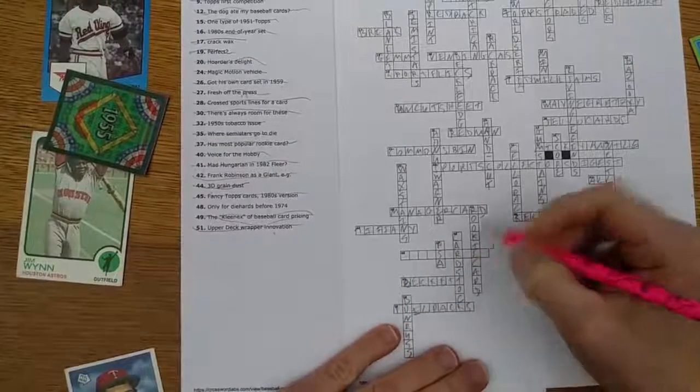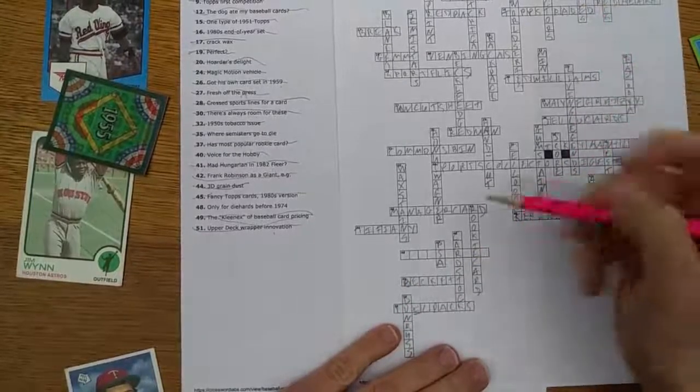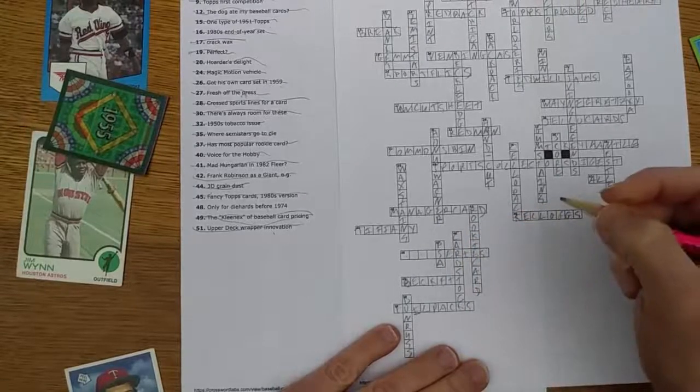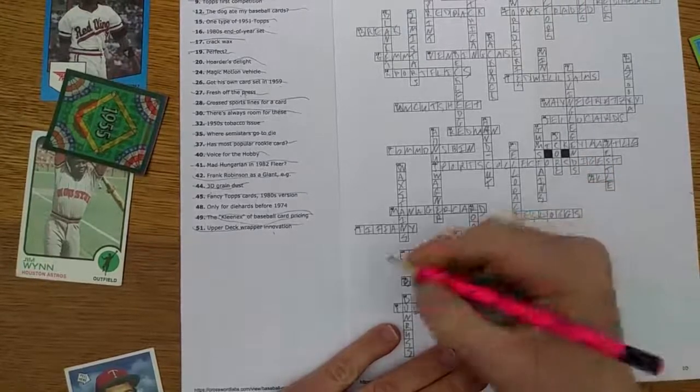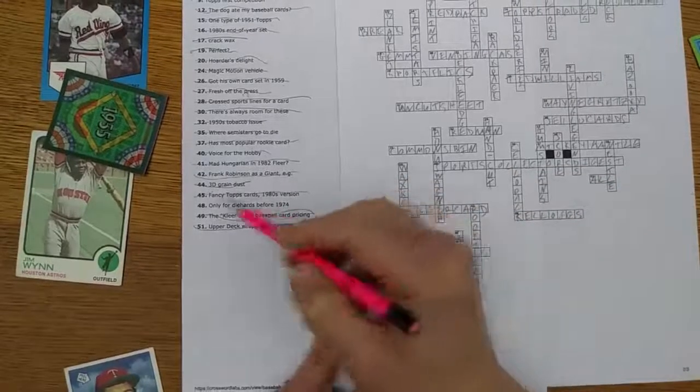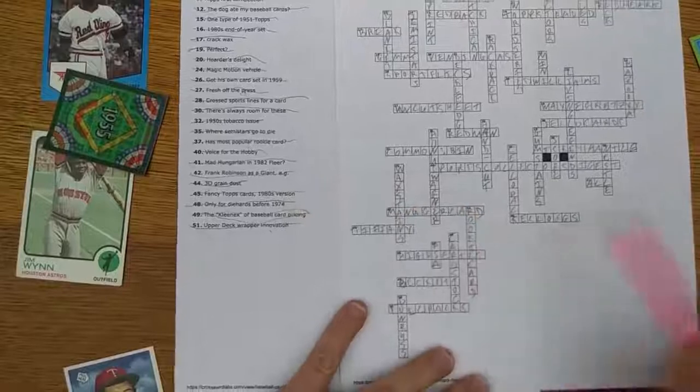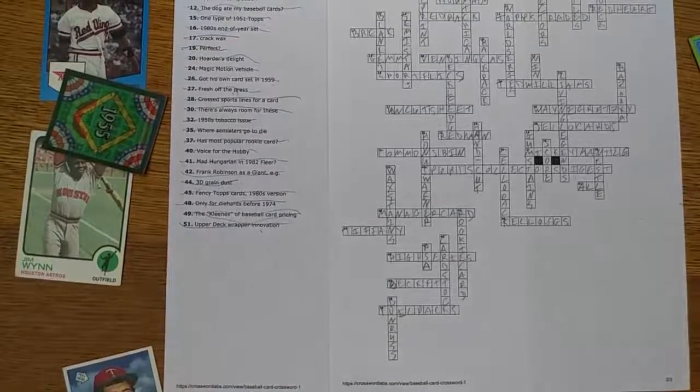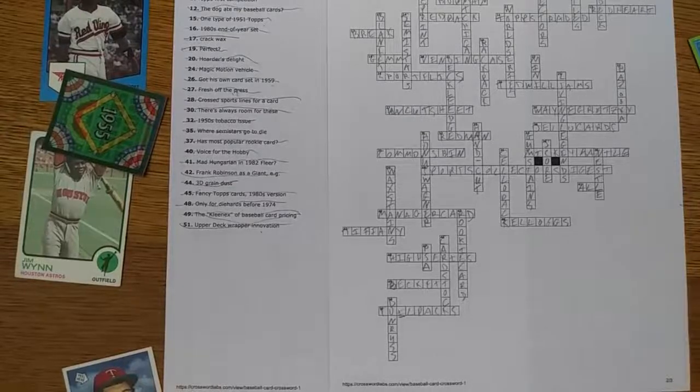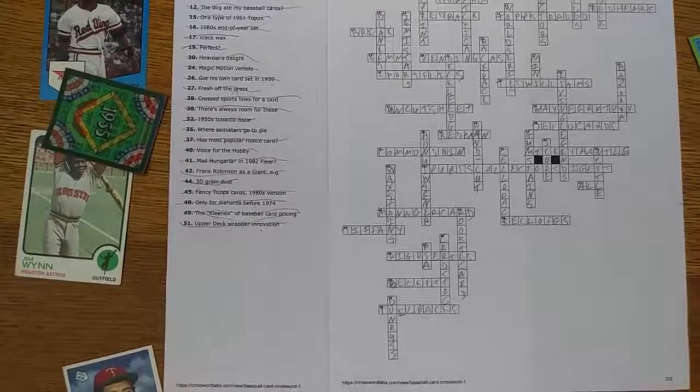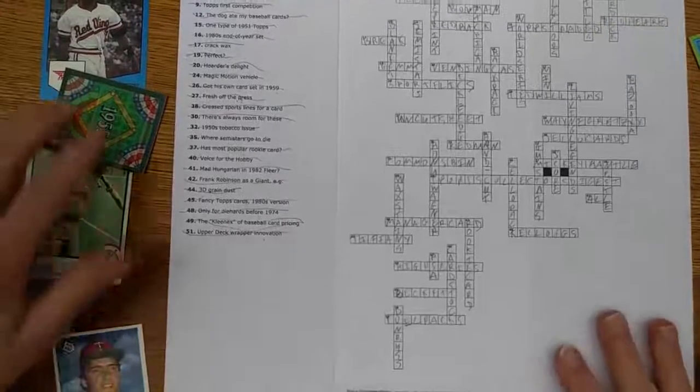And then only for diehards before 1974. So we know from above, the low series, the pattern there. So it's not set collecting or whatever, but it is, I believe, high series. High series always seemed to be in short supply. It was supply and demand, I guess, because football season was usually underway by the time the high series came out. And so stores didn't get as many for their shelves. So there you have it.